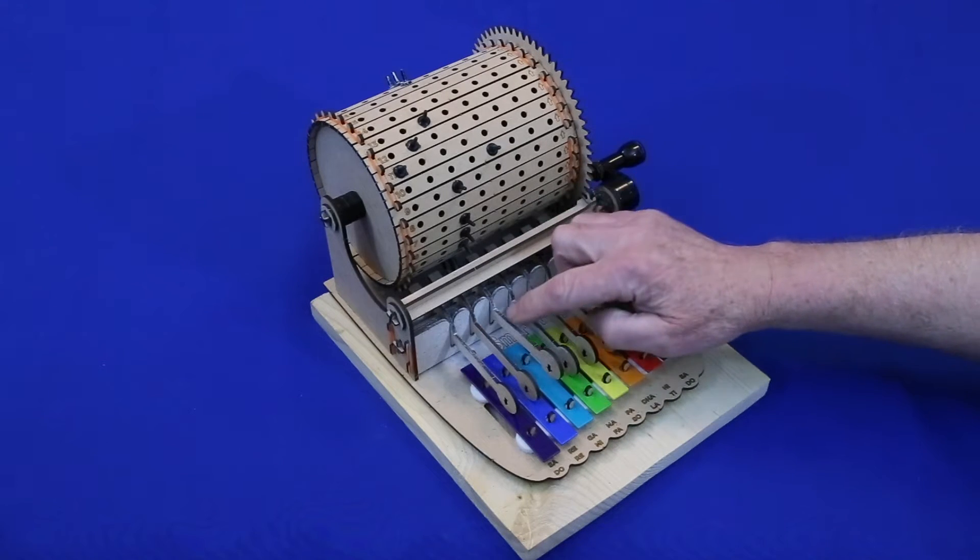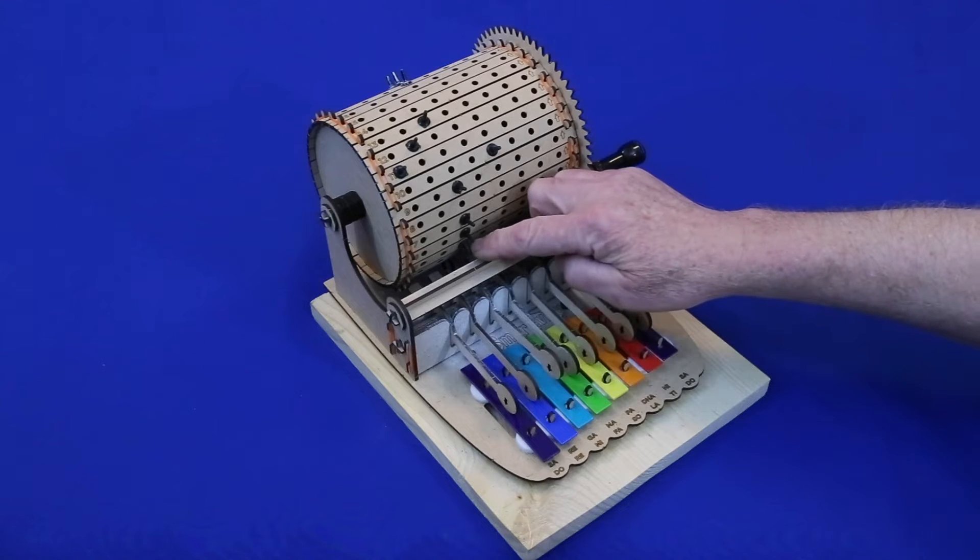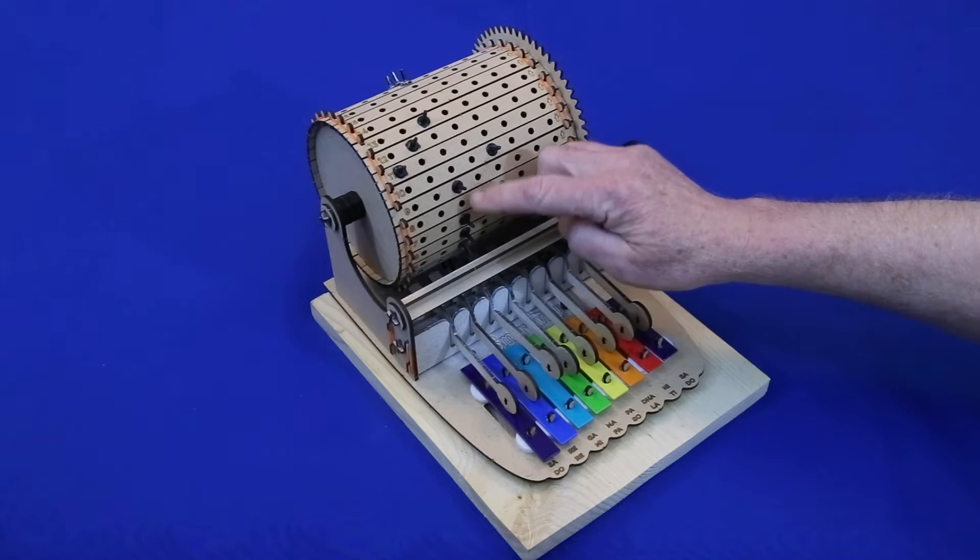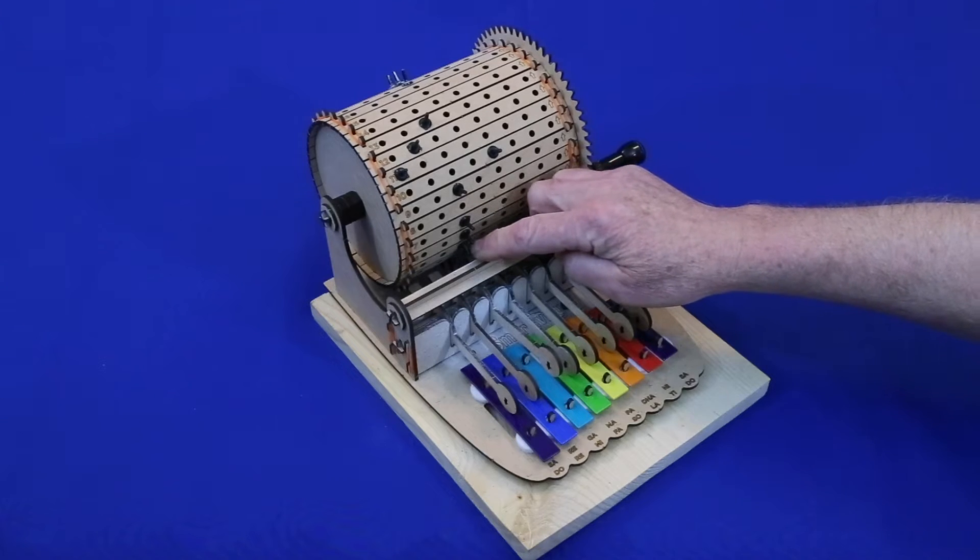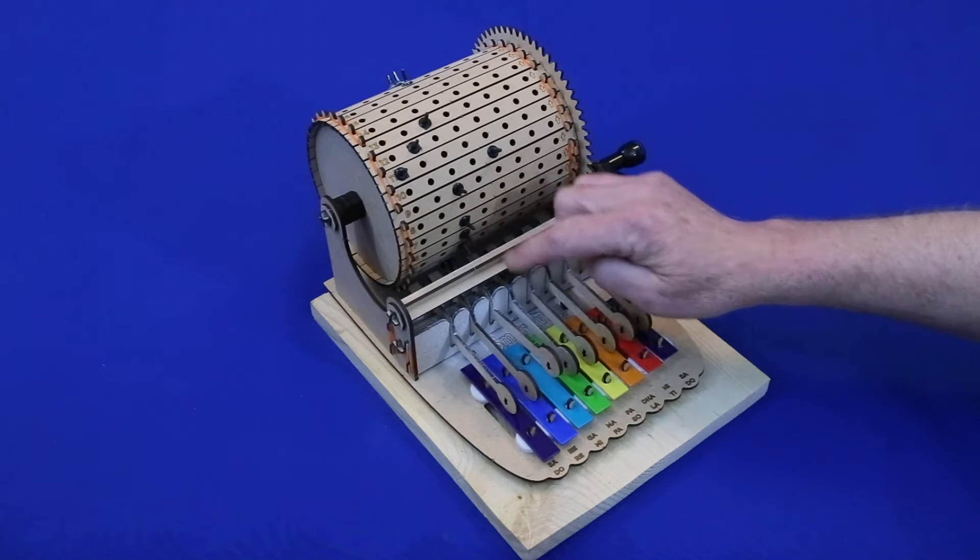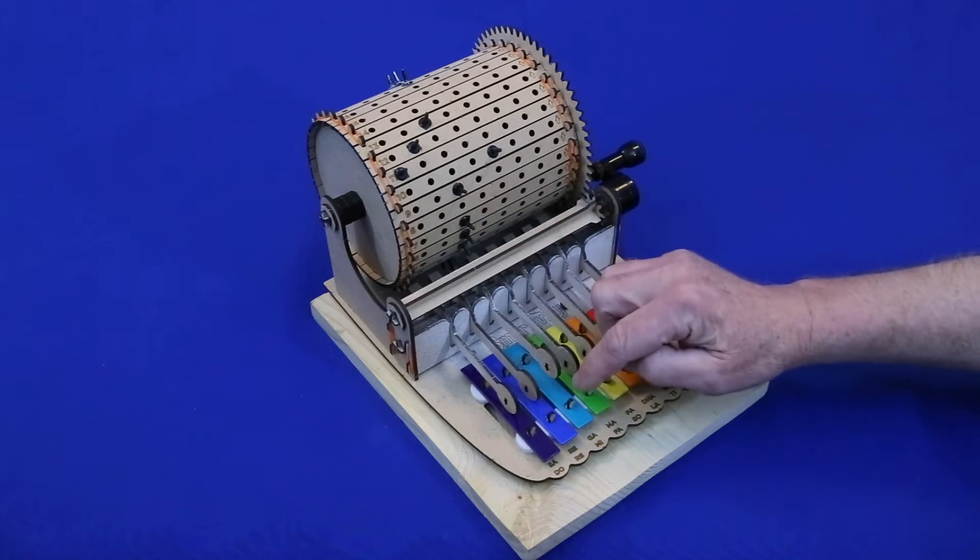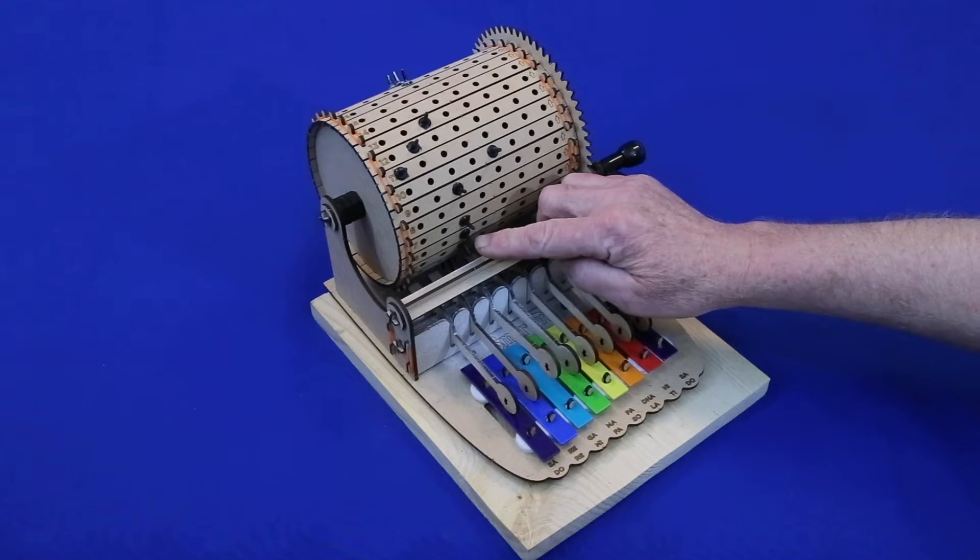What's happening is that the end of these arms are triggered by these pins. And if there are two or more pins in a row, the first pin lifts the arm, but before the arm can fall and make a note, the second pin catches it.